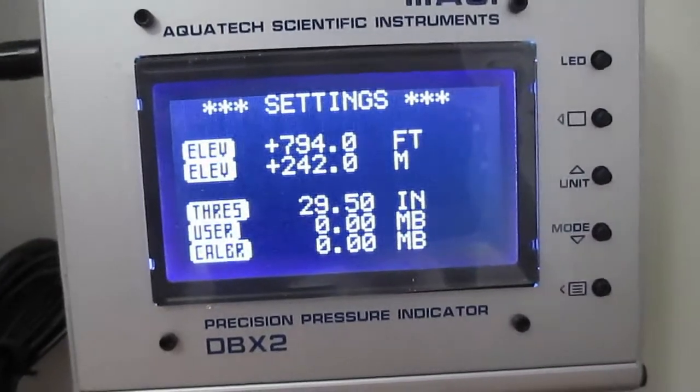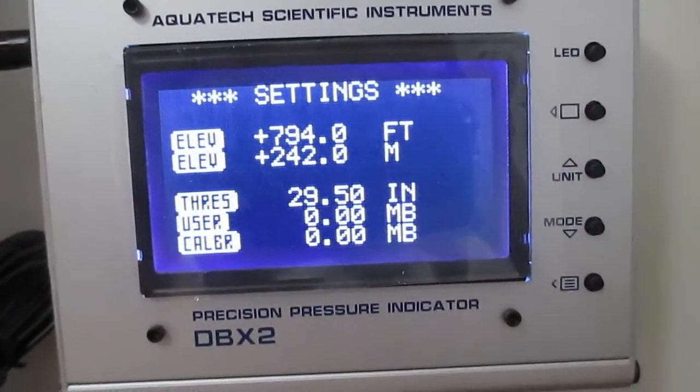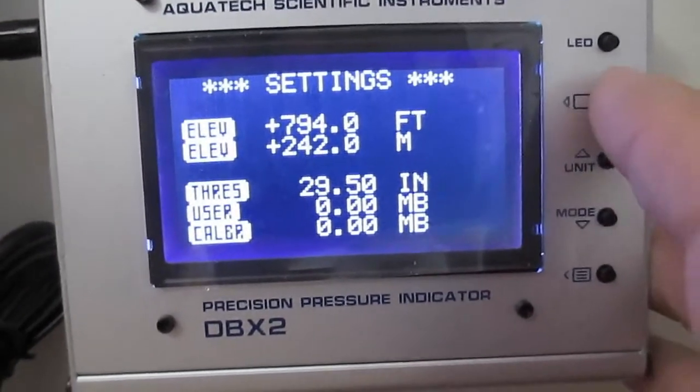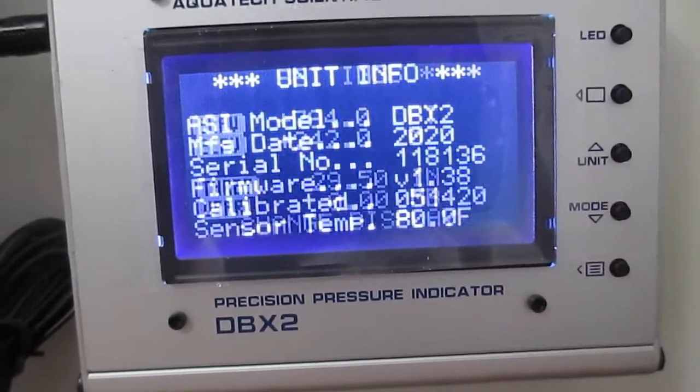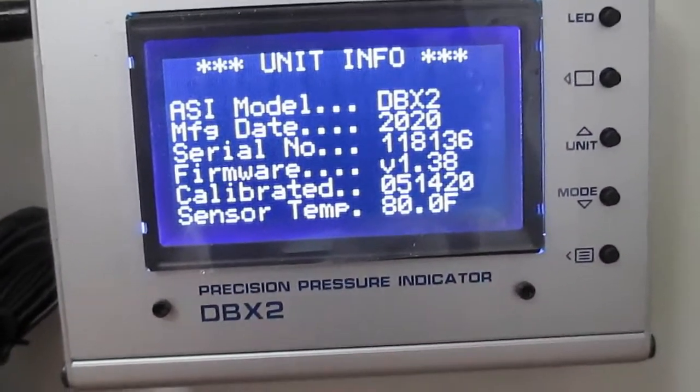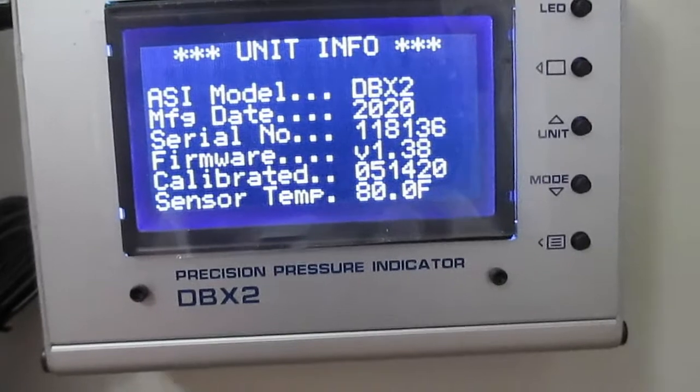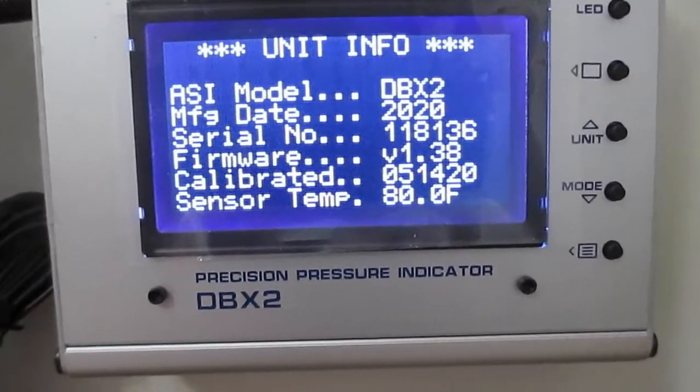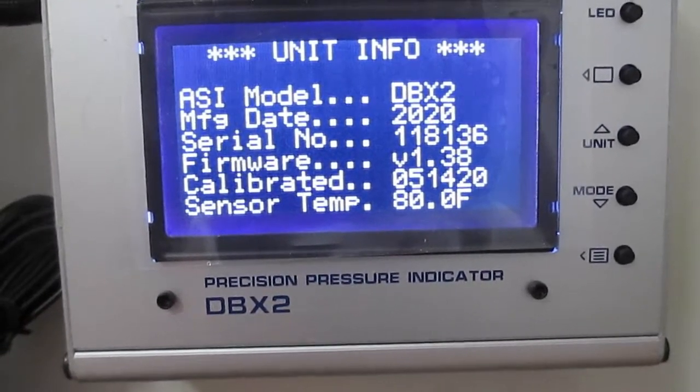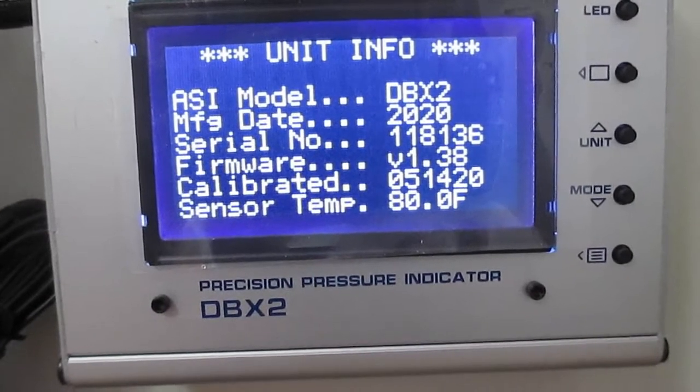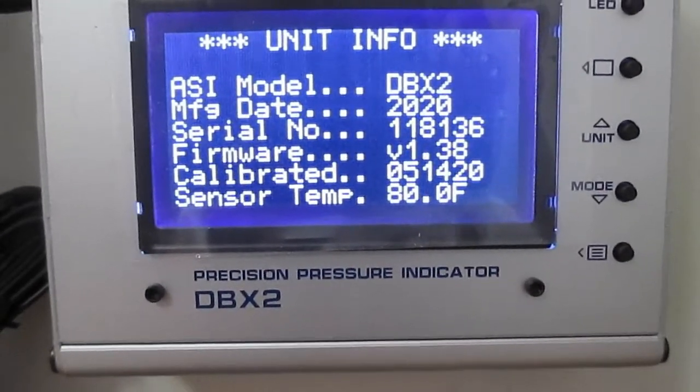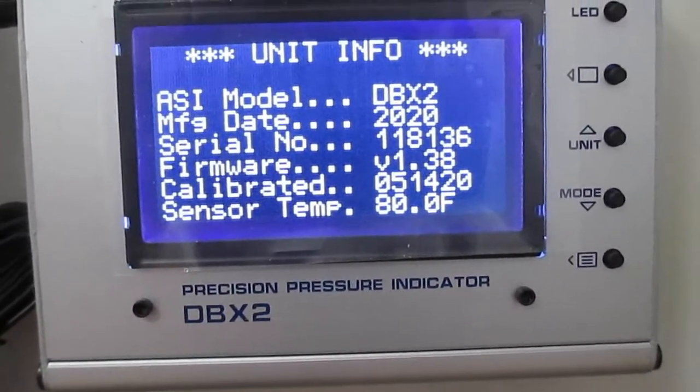Next one shows you the settings. The next one will show you the unit information. It's a DBX-2 manufactured this year, the serial number and version. Version is 1.38. It was calibrated the 14th of May, and the current temperature on the sensor.